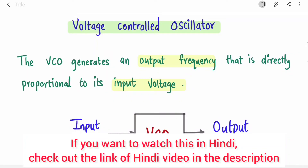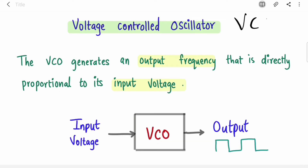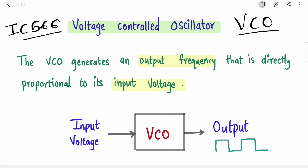Welcome back to the channel. In this video we are going to cover voltage controlled oscillator, that is nothing but VCO. VCO is a very important topic — it is used in PLL, phase locked loop. So in order to understand PLL you should have a basic understanding of what a voltage controlled oscillator is. From an exam point of view, you will get questions like drawing the block diagram of IC 566, so this IC is very important.